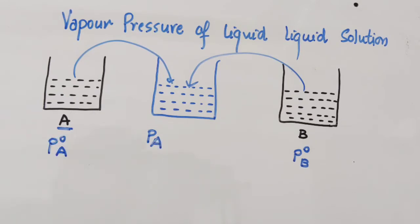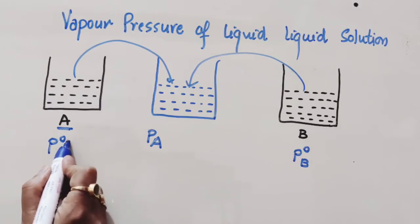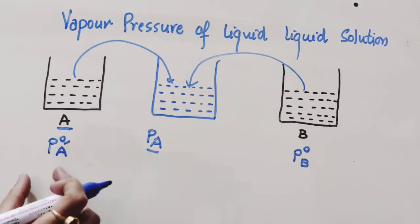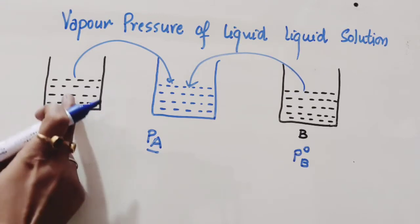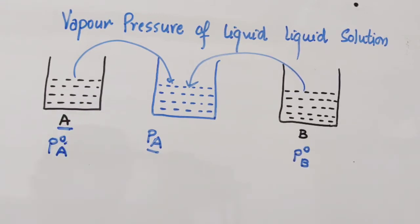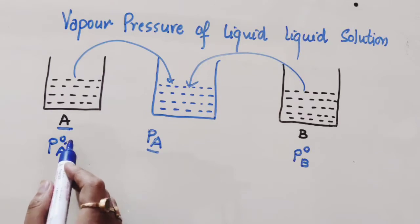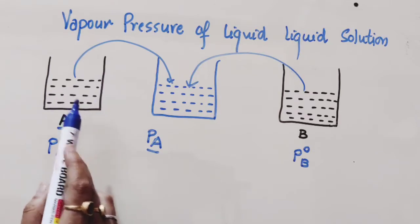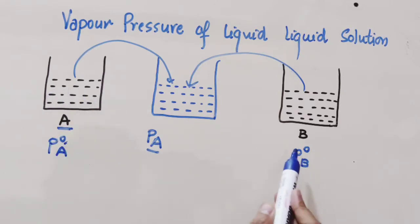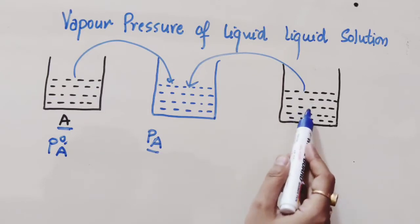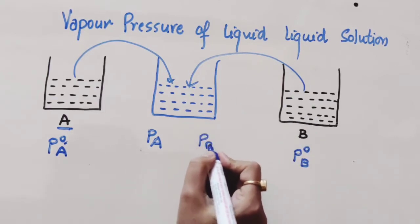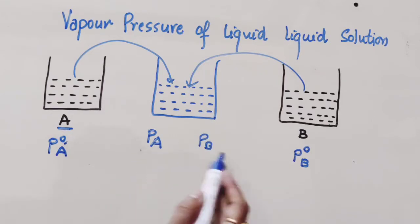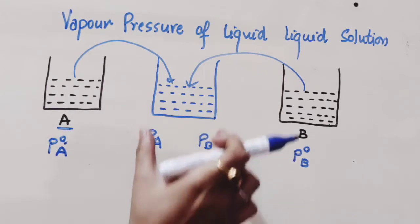This is a very important term which students are unable to understand: what is the difference between P⁰A and PA? P⁰A is the pressure of gas in its pure state, so P⁰A is the vapor pressure of pure component A. P⁰B is the vapor pressure of pure component B, and PA and PB are the partial vapor pressures in the mixture.